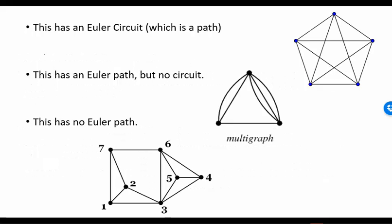Let's look at some examples. In this first graph, which has five nodes and ten edges, an Euler circuit is possible. If you look at each vertex, there are four edges coming off from each of them, and four is an even number. To make this circuit, I could start here and do the classic star figure, then go around the outside, and that brings me back to the starting point. There are certainly other ways of doing it.